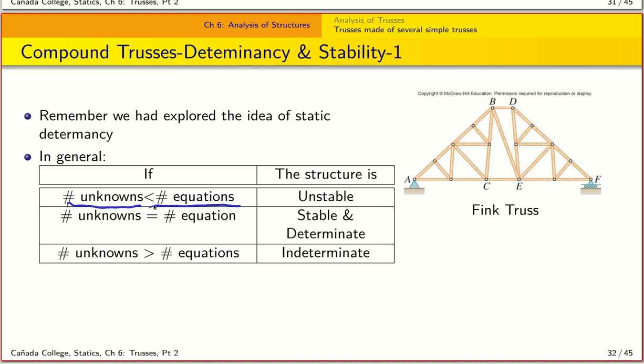So if the number of unknowns was less than the number of equations, we had an unstable system. Likewise, if the number of unknowns was equal to the number of equilibrium equations, we had a stable system in which we could determine all the unknown forces. So this is stable and determinate.